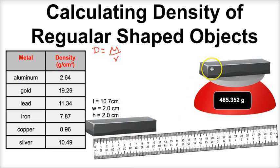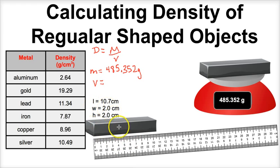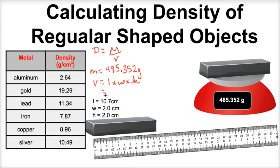We've taken this bar and put it on a scale — its mass is 485.352 grams. To get the volume of this unknown metal, I'll measure it using a meter stick. We have the measurements of length, width, and height, and we multiply these together to get the volume of a rectangular box — length times width times height. When we put this in our calculator we end up with 43 cubic centimeters.